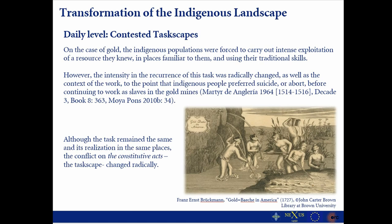By comparing these two patterns from the indigenous to the early colonial, I identified that the transformation of the indigenous landscape happened at two levels. The first, a daily level connected to contested landscapes: the indigenous population were forced to carry out intense exploitation of a resource they already knew, in familiar places using their traditional skills. However, the intensity and recurrence of this task was radically changed since they were now forced to do it as slaves — to the point that indigenous people preferred suicide or abortion before continuing to work as slaves in the gold mines. In theoretical terms, although the task of exploiting gold remained the same and in the same places, the conflict in the constitutive acts of that task radically changed.